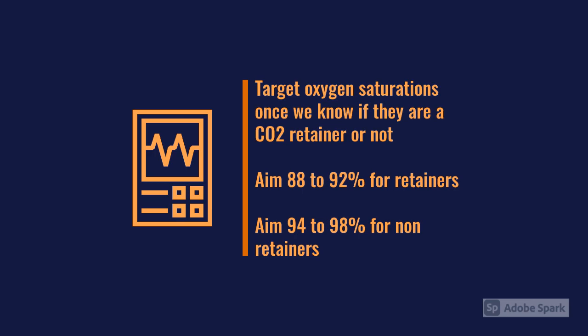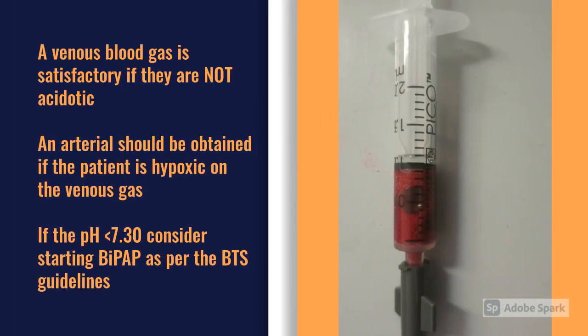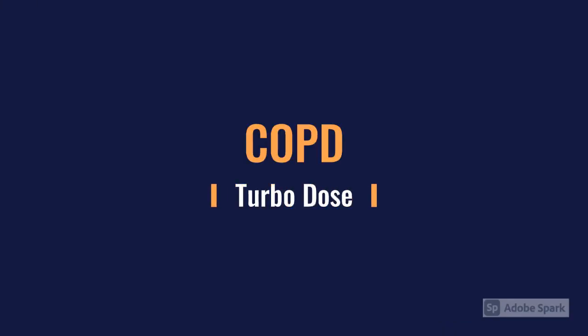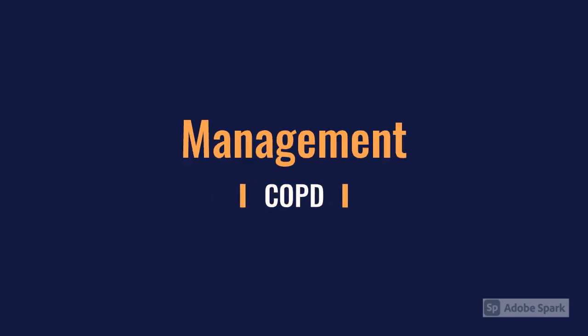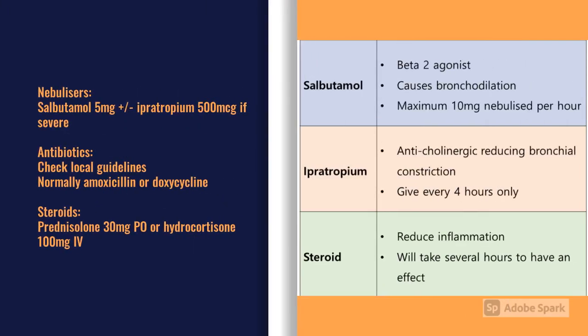For blood gases, a venous gas initially is certainly enough for COPD patients. If they're acidotic, you might want to consider an arterial blood gas, as that will determine whether you need BiPAP. If the pH is less than 7.30, as per the BTS guidelines, you should consider starting BiPAP. Most of the pharmacological management falls under nebulised salbutamol and nebulised ipratropium bromide, with antibiotics given quite liberally in exacerbations, and parenteral steroids.